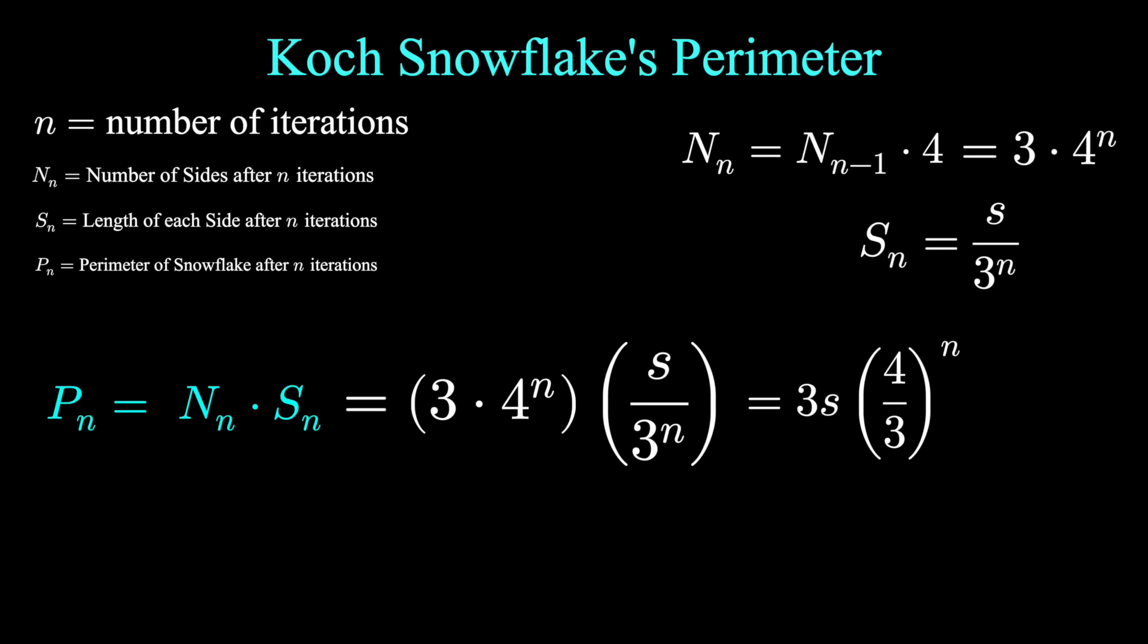So you might be wondering, what happens if we just do this process forever? What if we take the limit as n goes to infinity? After we do an infinite number of iterations, what do we expect the perimeter to approach? Well, taking this limit, the quantity four thirds just keeps getting larger and larger. Four thirds is bigger than one. Multiplying it by itself over and over is going to get bigger and bigger. And so the limit of the perimeter is infinity. This perimeter should be unbounded.